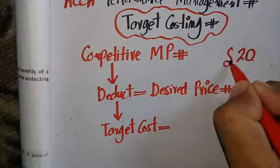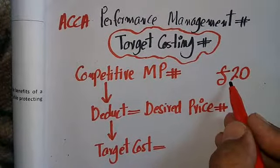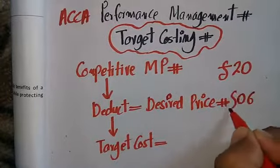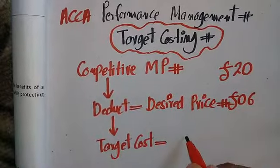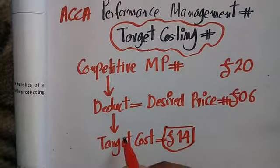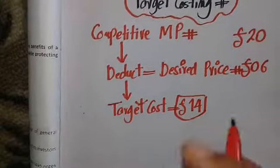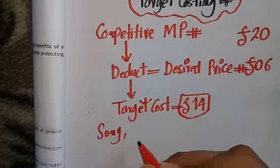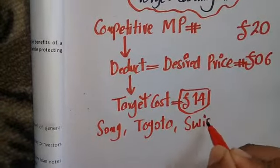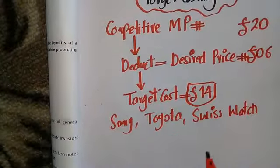For example, suppose we have a competitive market price of $20 for a product being sold in the market. We deduct the desired profit — say $6 — so the target cost will be 20 minus 6, which equals $14. Different companies like Sony, Toyota, and Swiss watch companies use this target costing approach.